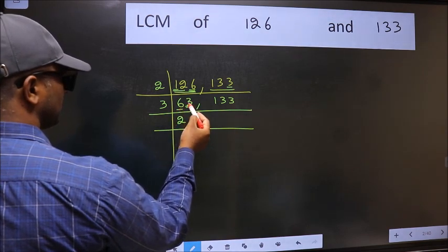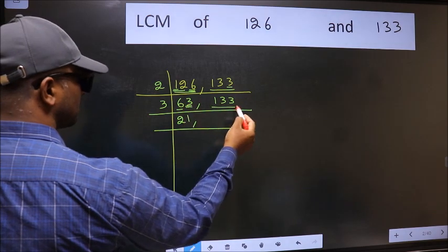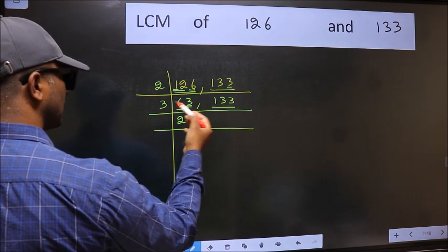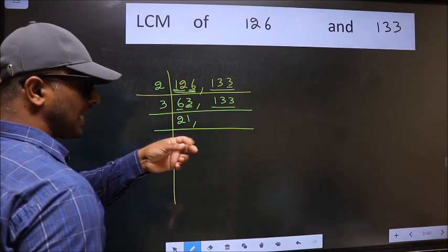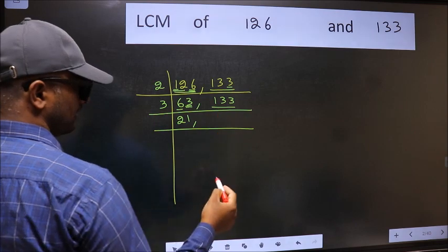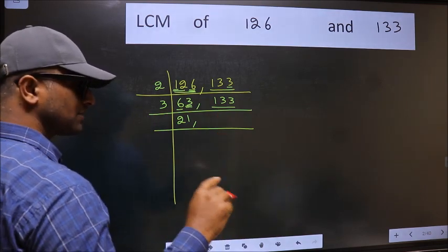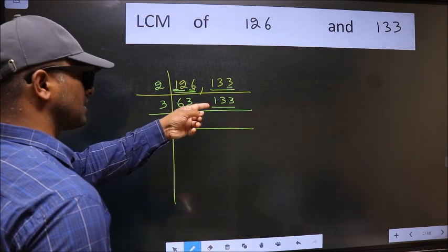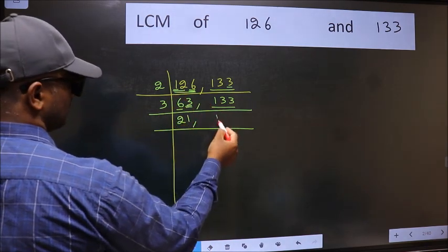The other number 3, when do we get 3 in 3 table? 3, 1, 3. The other number 133. To check whether it's divisible by 3, add the digits. 1 plus 3 plus 3 is 7, and 7 is not divisible by 3. So this number is also not divisible by 3. Write it down as it is.